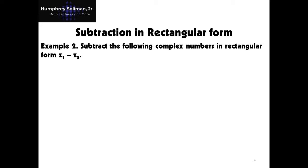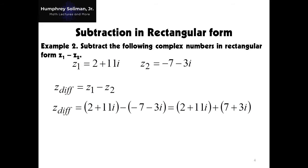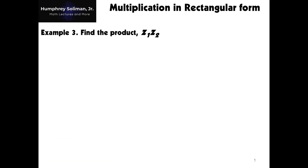In subtraction of complex numbers using the rectangular form, we have here example number 2. We have the same given as example number 1: z1 equals 2 plus 11i, and z2 equals negative 7 minus 3i. We will call the difference of z1 and z2 as z diff. Just like subtraction of algebraic terms, we can change the minus sign into addition, but we have to switch the sign of z2. Then we combine the similar terms, real numbers and imaginary numbers separately. This will give us z diff equals 9 plus 14i.